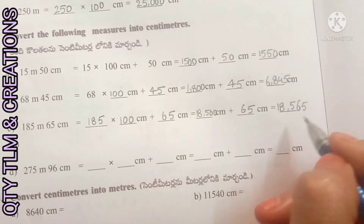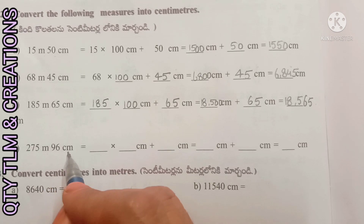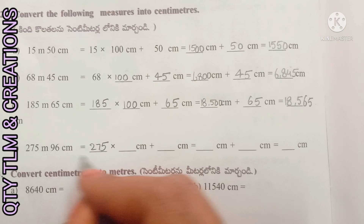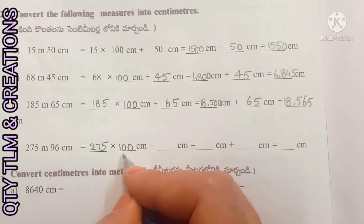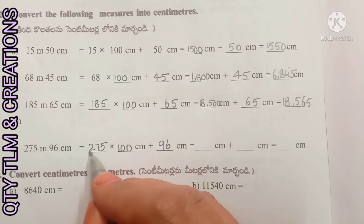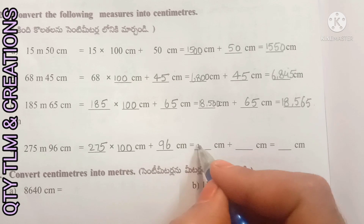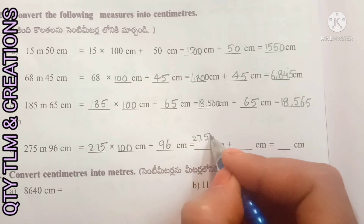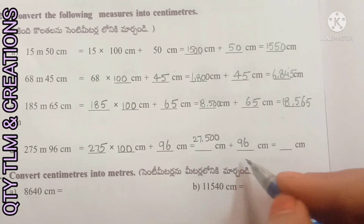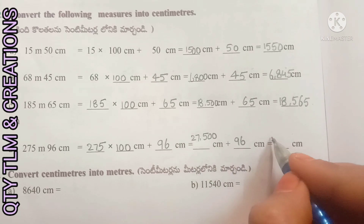Next, 275 meters 96 centimeters: 275 meters into 100 centimeters plus 96 centimeters. 275 into 100 equals 27,500 plus 96 centimeters equals 27,596 centimeters.